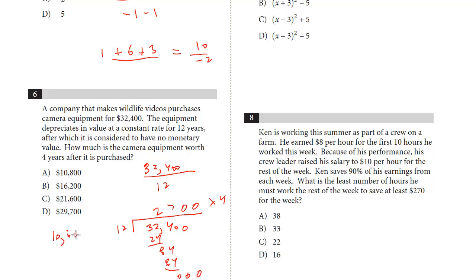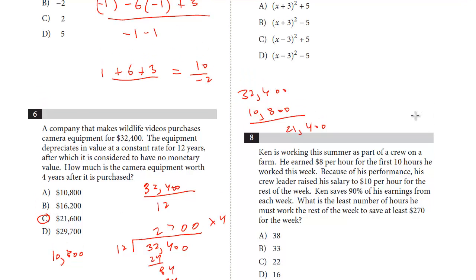You could do it the long way, but try to look for shortcuts. It's 10,800 is the total amount of depreciation. That's 2,700 times 4. We're starting at 32,400, and we're depreciating by 10,800. So 10,800 is pretty close to 11. If we just subtracted 11,000, we'd end up with 21,400. But we've got to add back the 200 because it's not quite 11,000. It's 10,800, and so the answer is 21,600. Look for shortcuts. Not a hard question, but just be careful with your arithmetic.